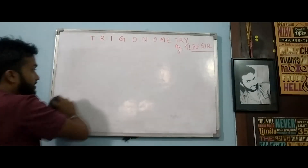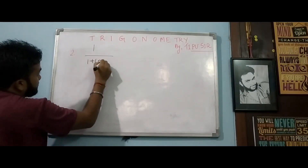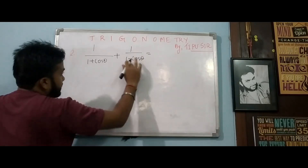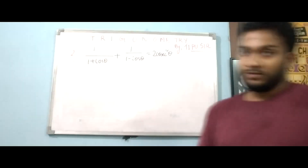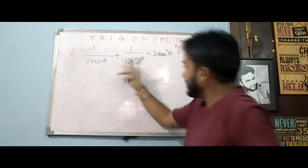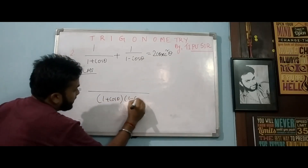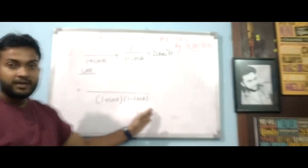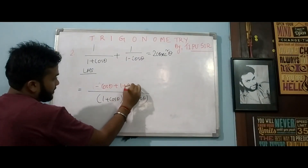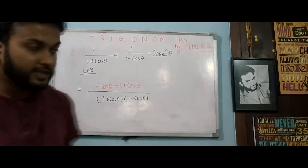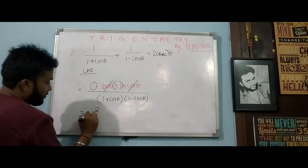For sum number 2: 1/(1 + cos theta) + 1/(1 − cos theta) = 2/sin²θ. Again the same logic — we have (1 + cos theta) and (1 − cos theta), which is A plus B and A minus B. Taking LCM of the left-hand side, the numerator becomes (1 − cos theta) + (1 + cos theta). The minus cos and plus cos cancel each other, leaving 1 plus 1 equals 2.